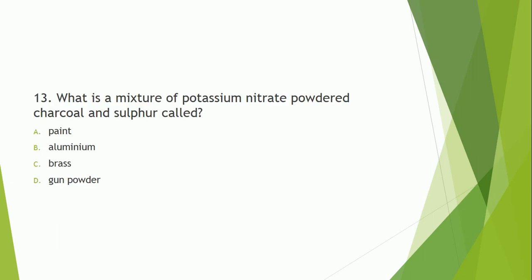Question number 13: What is a mixture of potassium nitrate powder, charcoal, and sulphur called? The mixture of potassium nitrate powder, charcoal, and sulphur is called gunpowder. The correct answer is option D.